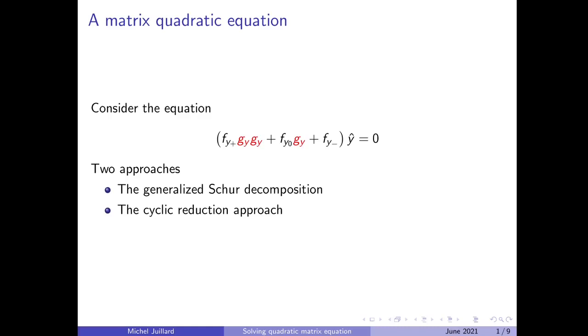When we derive the first-order approximation solution of a DSGE model, we encounter the following matrix-quadratic equation. Gy is a matrix of first-order derivative of the solution function g with respect to the endogenous variable y, which is our unknown here. You see that we have the product of Gy times Gy and yet another time here. There is no simple algebraic way to solve such an equation.